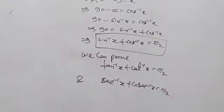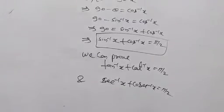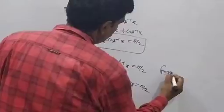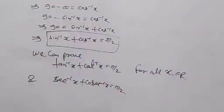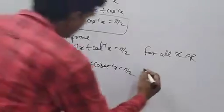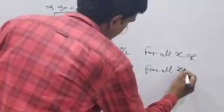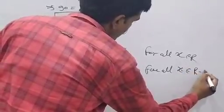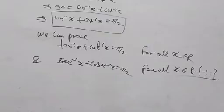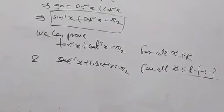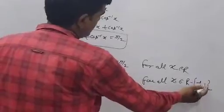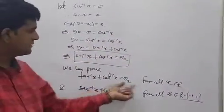So if we can prove sin inverse x plus cos inverse x equals pi by 2, then also we can prove tan inverse x plus cot inverse x equals pi by 2, where x belongs to the real numbers. And sec inverse x plus cosec inverse x equals pi by 2, where x belongs to real numbers minus the set minus 1 comma 1.